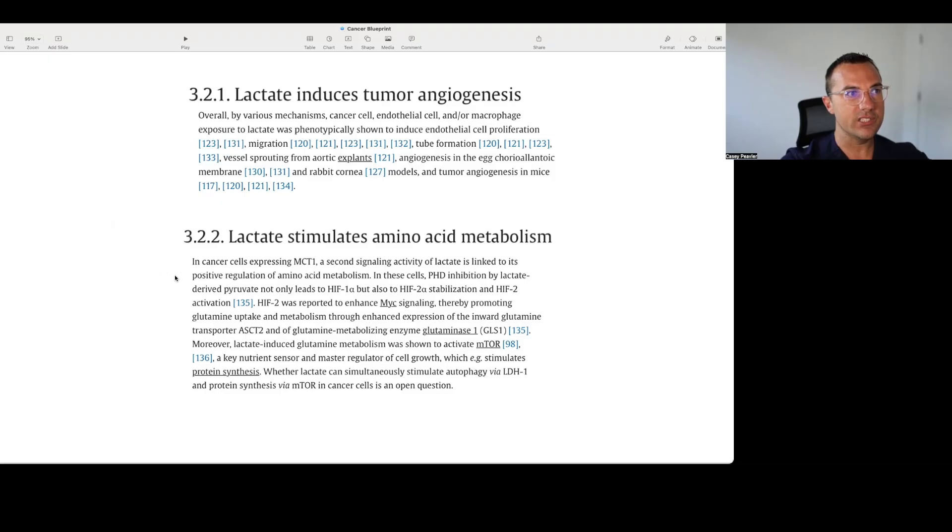In cancer cells expressing MCT1, a second signaling activity of lactate is linked to its positive regulation of amino acid metabolism. In these cells, PHD inhibition by lactate-derived pyruvate not only leads to HIF-1-alpha, but also HIF-2-alpha stabilization and HIF-2 activation. HIF-2 was reported to enhance MYC signaling, therefore promoting glutamine uptake and metabolism through enhanced expression of inward glutamine transporter ASCT2 and glutamine metabolism enzyme glutaminase 1, GLS1. That's the enzyme that DON blocks. Moreover, lactate-induced glutamine metabolism was shown to activate mTOR, a key nutrient sensor and master regulator of cell growth, which stimulates protein synthesis. Whether lactate can simultaneously stimulate autophagy via LDH-1 and protein synthesis via mTOR in cancer cells is an open question.